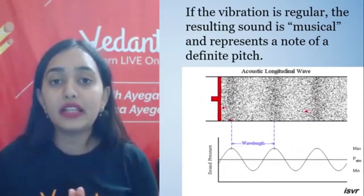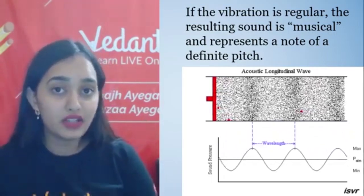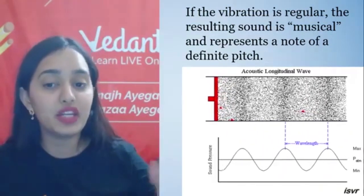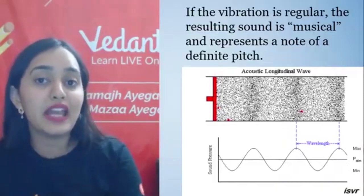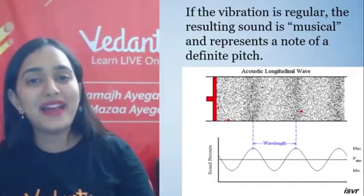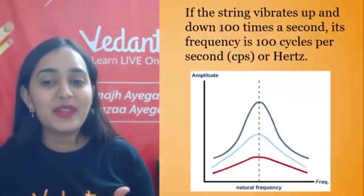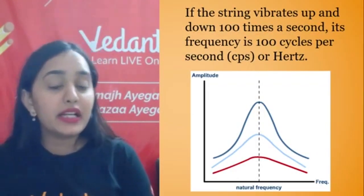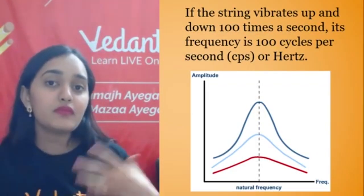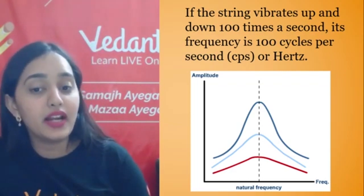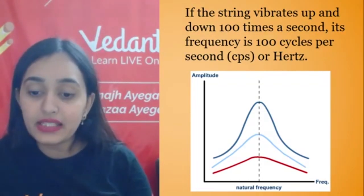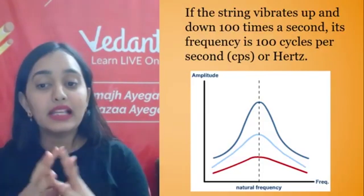Music is a note with a definite pitch — it means the same pitch on the same pitch. And this calculation is math. So if a string vibrates up and down 100 times a second, then the frequency produced is 100 cycles per second. And this frequency is what we calculate using math — we calculate the sound frequency.